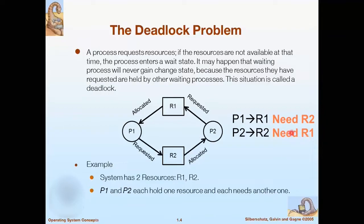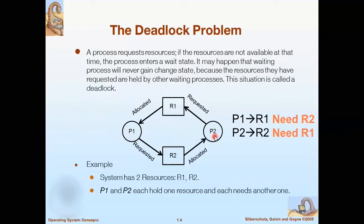In this situation, until P2 releases R2, P1 cannot access both R1 and R2, and similarly until P1 releases R1, P2 cannot access both R1 and R2. It may happen that waiting processes will never change state because the resources they have requested are held by other waiting processes. Both processes P1 and P2 are in a waiting state and cannot change their state because neither wants to sacrifice their resources. That is why this situation is called a complete deadlock situation.